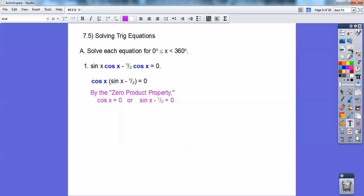and then zero product property says I can set each of those factors equal to zero. So the cosine of x equals zero at 90 degrees and 270 degrees, and the sine of x equals a half at 30 degrees or 150 degrees. So there's my answer right there. There's four different places to make that top equation true.